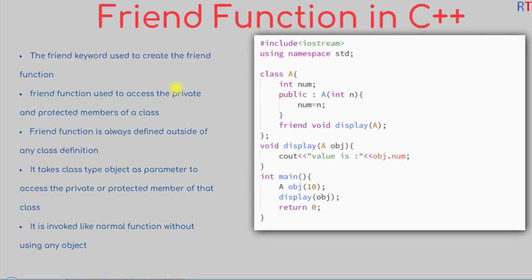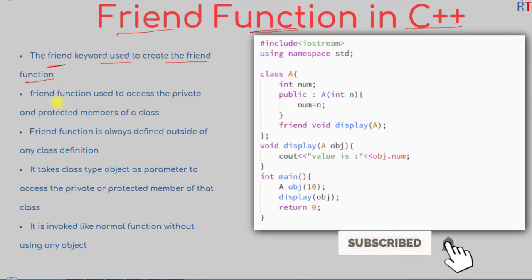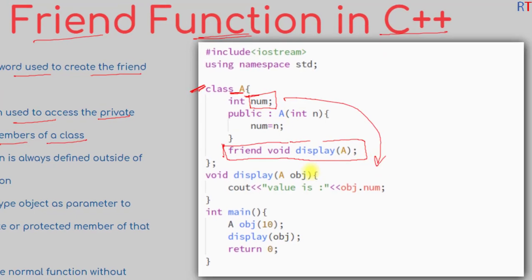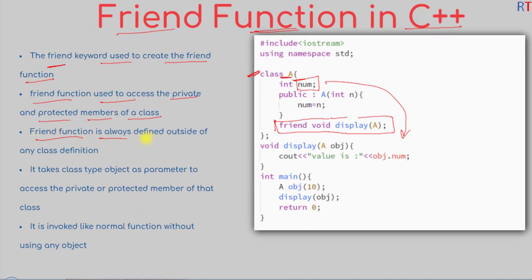In this video we're going to talk about friend functions in C++ programming. The friend keyword is used to create the friend function, and the friend function is used to access the private and protected members of a class. For example, we have one class A with one private data member. We can declare one friend function inside the class definition and access the private member from outside the class definition. The friend function is always defined outside of any class definition.